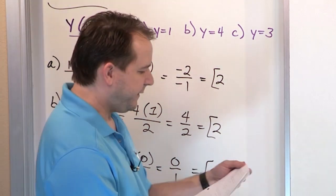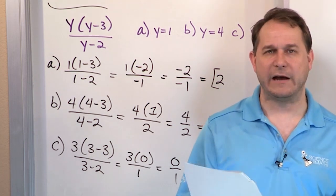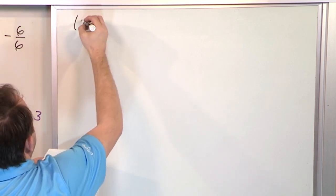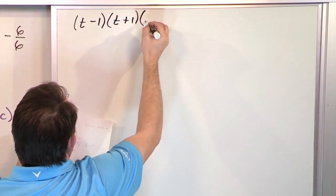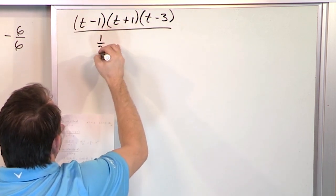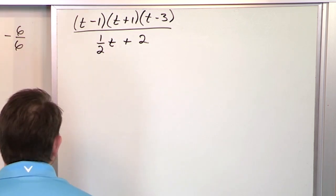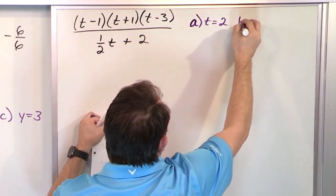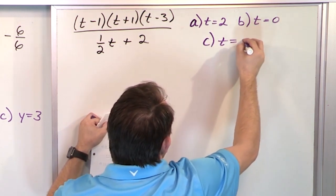Our last problem will be very similar — evaluating three different ways with three different values of the variable, but the expression itself is a bit more complicated. We have (t minus 1)(t plus 1)(t minus 3) divided by (½t plus 2). We want to evaluate when t equals 2, when t equals 0, and when t equals negative 2.